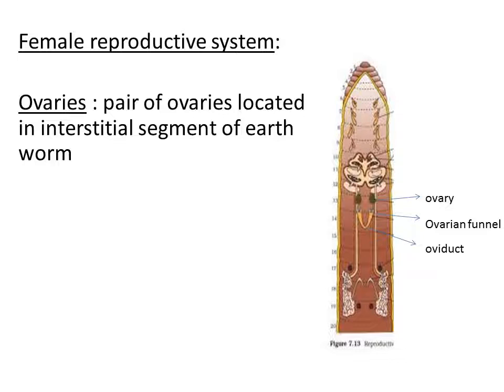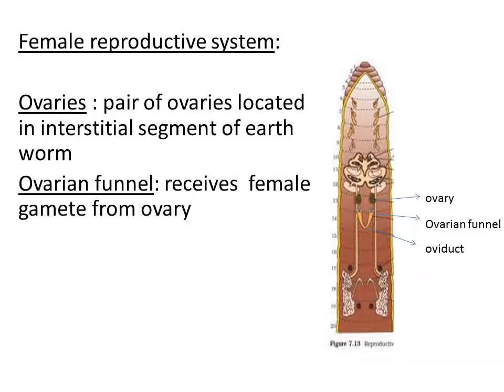The ovaries are connected with one more organ called the ovarian funnel. Just below the ovary there is a funnel-shaped structure — that is the ovarian funnel. The function of the ovarian funnel is to receive the female gametes from the ovary. As soon as the ovary releases gametes, this funnel receives them.